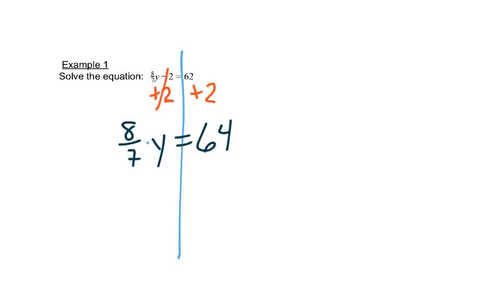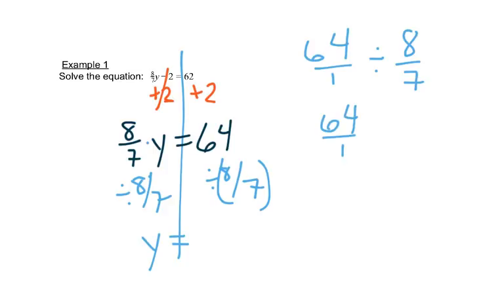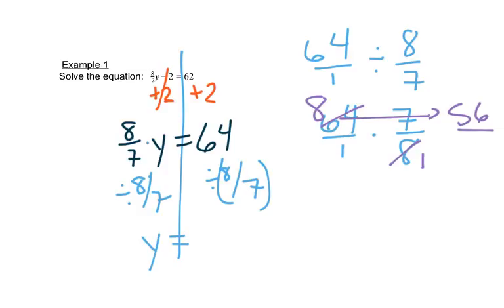Now the 8-sevenths times y is really multiplication, so we'll divide by 8/7 on both sides. That leaves you with y equals... You can put this in parentheses and use your fraction button: 64 divided by 8/7. Or you can remember that dividing by a fraction means you take the first number, change division to multiplication, and flip the second one. 8 goes into 8 one time, and 8 goes into 64 eight times. Then we multiply straight across: 8 times 7 is 56, so we get y equals 56.